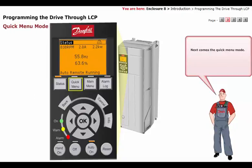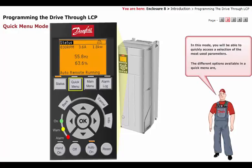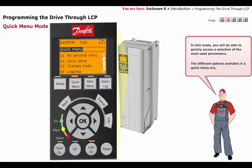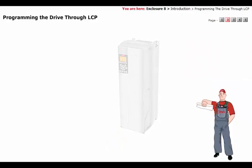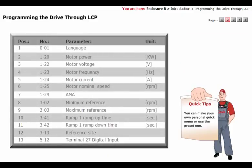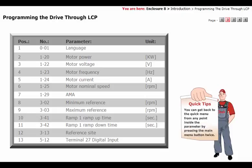Next comes the Quick Menu mode. In this mode, you will be able to quickly access a selection of the most-used parameters. The different options available in the Quick Menu are: My Personal Menu, Quick Setup, Changes Made, Loggings, and Motor Setup. You can make your own personal quick menu or use the preset one. You can also select a list of changes made or show a set of loggings. You can get back to the Quick Menu from any point inside the parameter by pressing the Main Menu button twice.